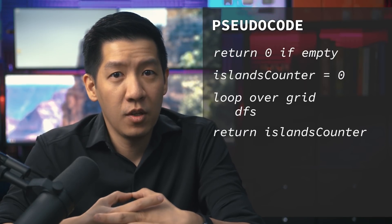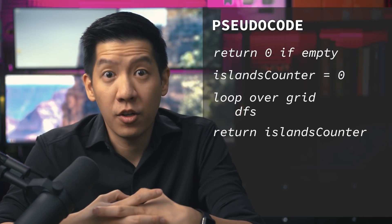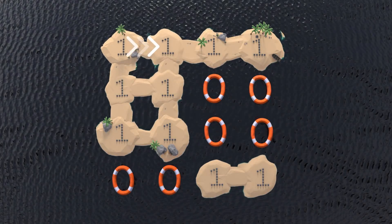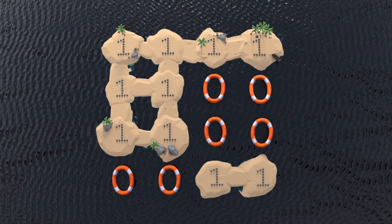Now onto the important bits. What happens if we land on a one? How do we know if this tile of land is part of a larger island? After we mark this square as visited — let's say by setting the value from one to zero — we just pick a direction, let's say right, and check its neighbor tile to see if it is also land. If it is, they're part of the same island.